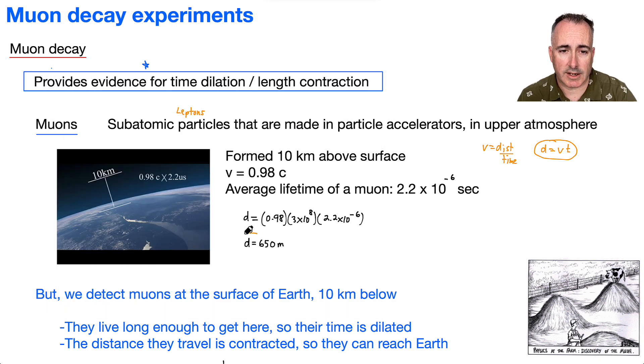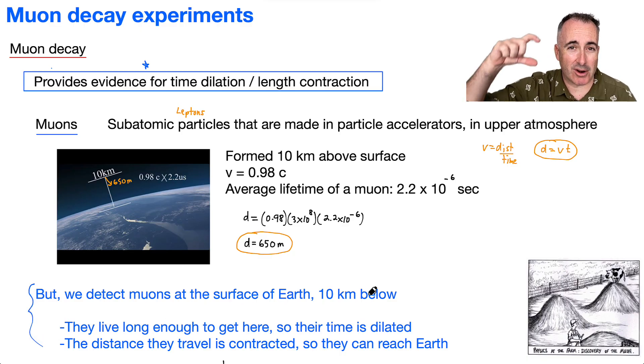So because of that, keep in mind, what does this really say? This says that these little particles should only be able to go around 650 meters. In other words, we shouldn't detect them. And yet we do. This is the key thing here. We detect them at the surface, which is 10 kilometers below. So how could it be that a particle that should only travel 650 meters is actually seen 10 kilometers below?